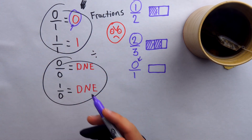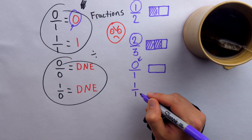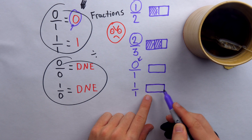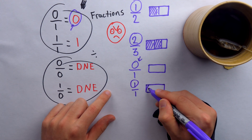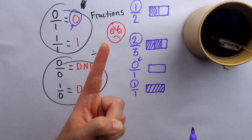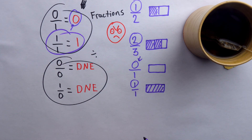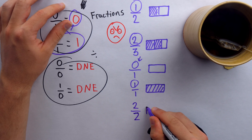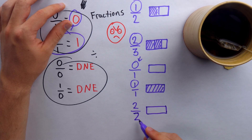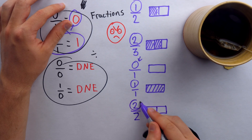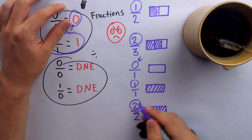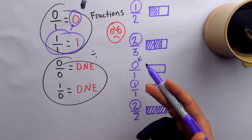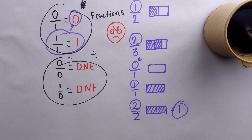Then this other equation, one over one, is like the same thing but opposite. Here's a whole — we represent that with a rectangle. It's been cut into one part, so we aren't actually cutting it at all. How many of the one parts do we have? We have one of them. So we would shade that one part, and we have the whole thing — one over one is equal to one. And hopefully you can see how this applies to similar situations, like two over two, or three over three, or four over four. If we cut a whole into some number of parts and we have all the parts, then we have one whole.